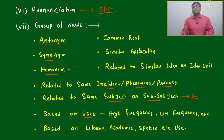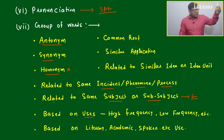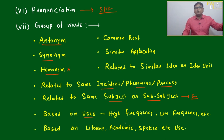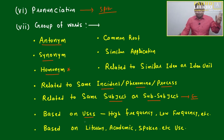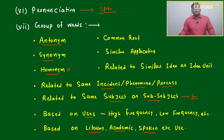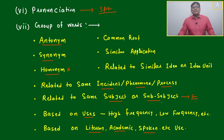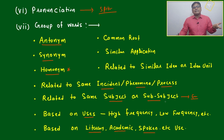Another group of words will be useful if you want to appear for GRE — this is a high frequency word list of 5000 words; only these will come in the exam. High frequency word, low frequency word — based on our requirement, based on our usage, based on our goal, it will change. Based on literal, academic, or spoken point of view, many words are very strict to use for a particular academic context.